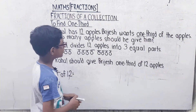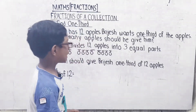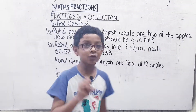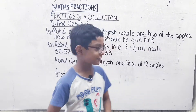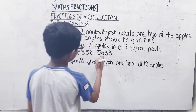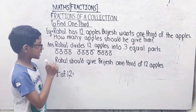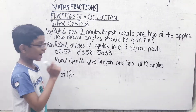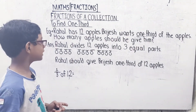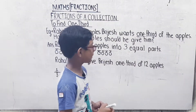Rahul divides 12 apples into 3 equal parts: 1 part, 2 part, 3 part. In each part there are 4 apples. Rahul should give Bridges one-third of 12 apples.